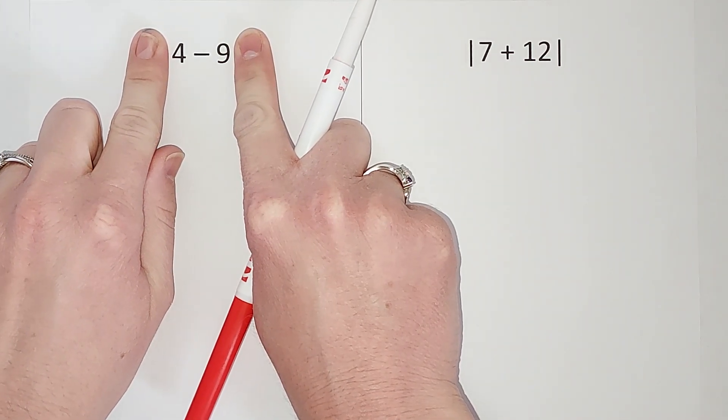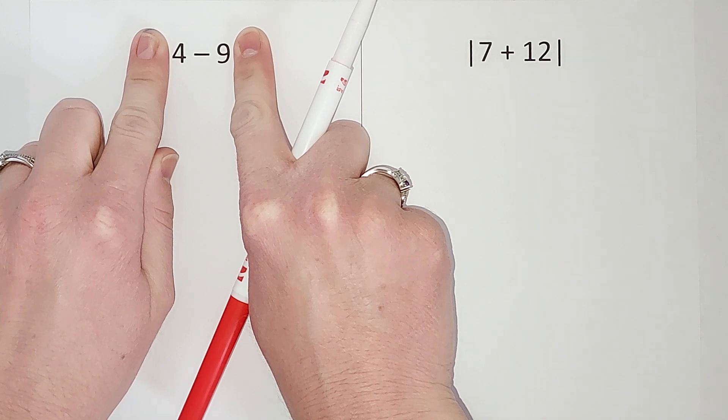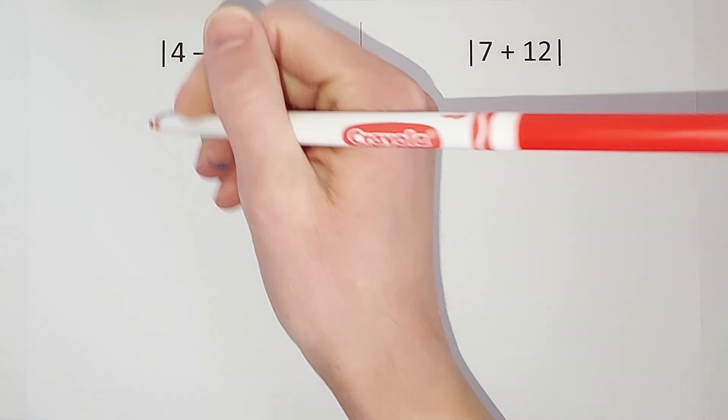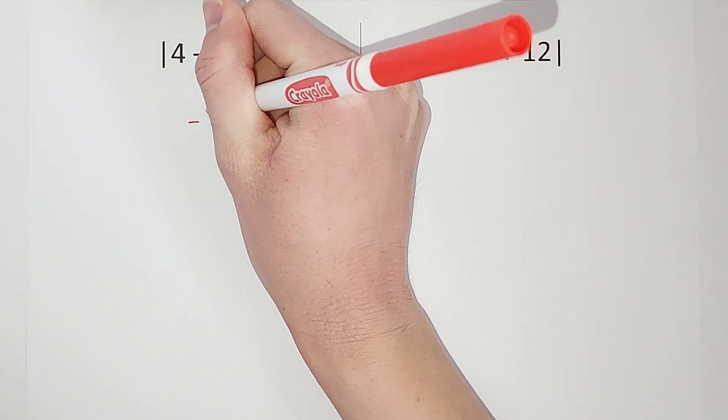So for half a second, we forget the absolute value bars. What does four minus nine give me? It gives me negative five.